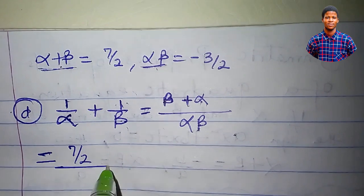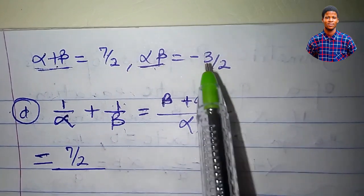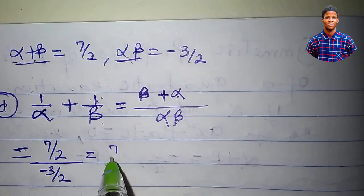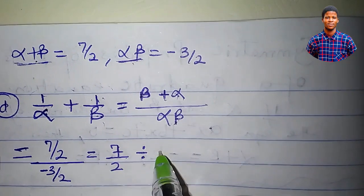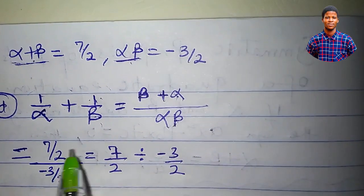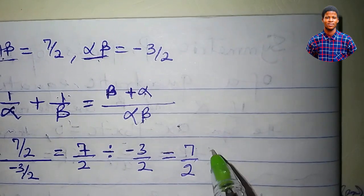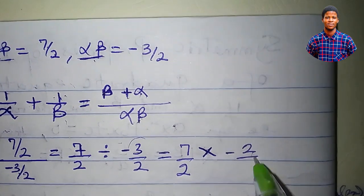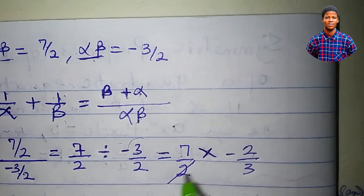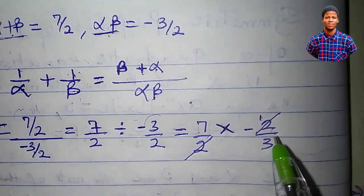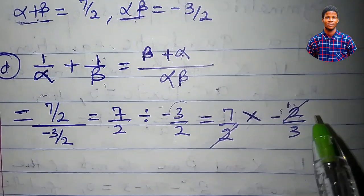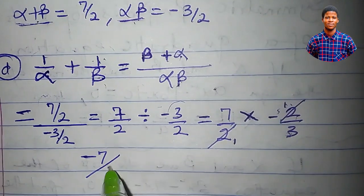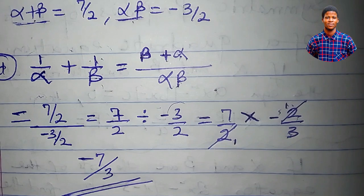We have (7 over 2) divided by (minus 3 over 2). Division becomes multiplication by the reciprocal, so this is (7 over 2) times (2 over minus 3). The 2s cancel, and 7 times minus 1 is minus 7, leaving minus 7 over 3. So 1 over alpha plus 1 over beta equals minus 7 over 3.